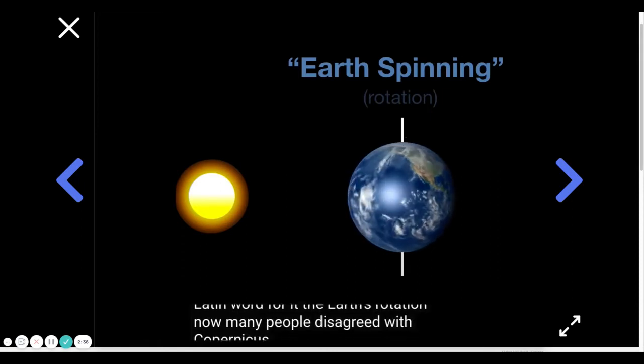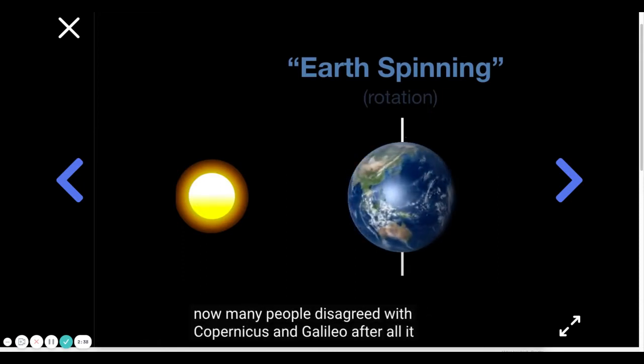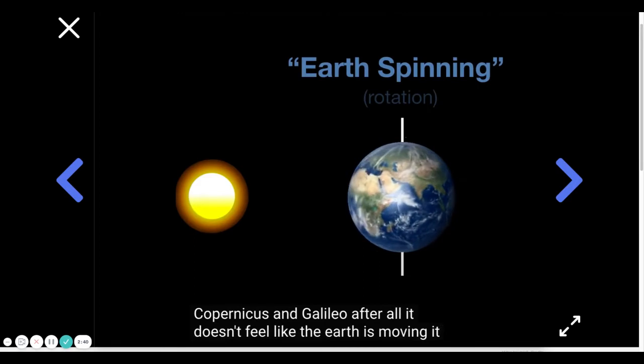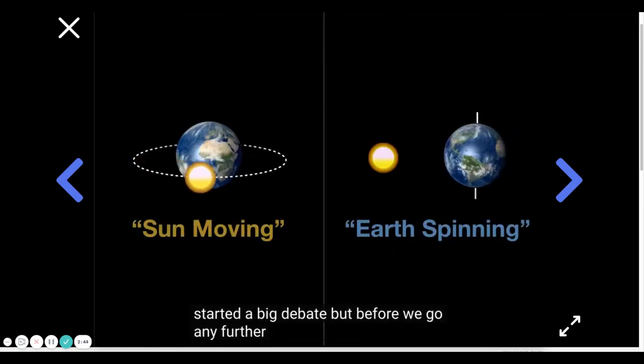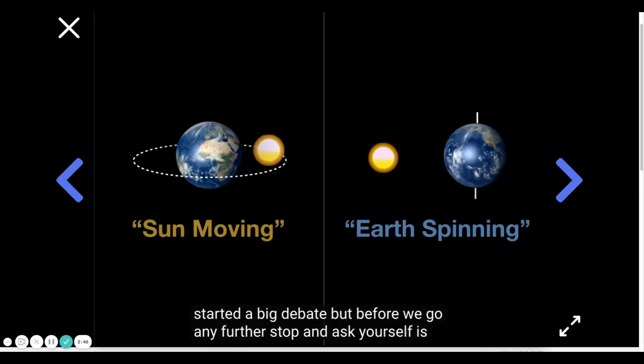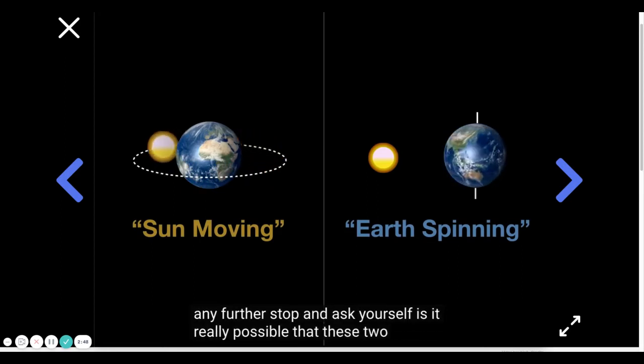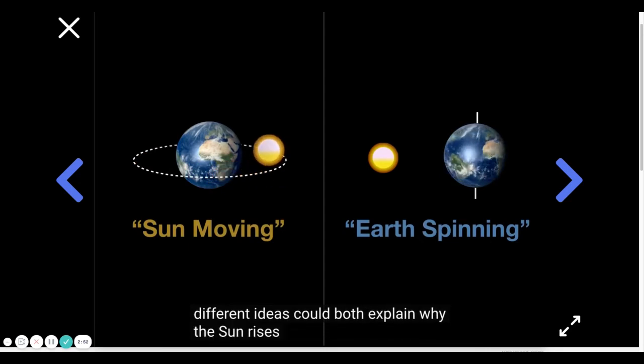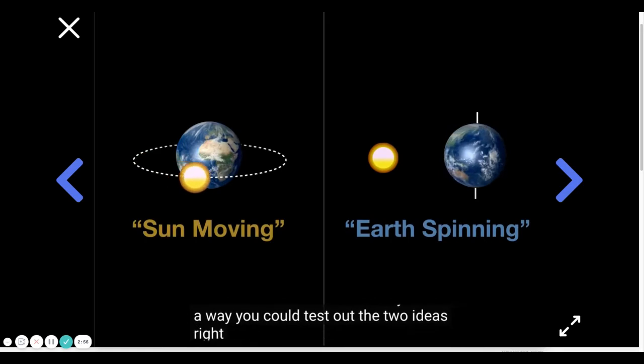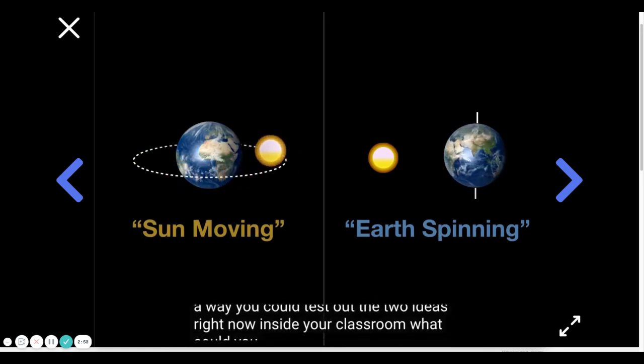Now many people disagreed with Copernicus and Galileo. After all, it doesn't feel like the earth is moving. It started a big debate. But before we go any further, stop and ask yourself, is it really possible that these two totally different ideas could both explain why the sun rises and sets each day? Is there a way you could test out the two ideas right now inside your classroom? What could you do?